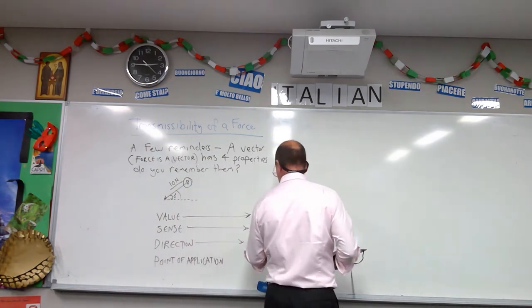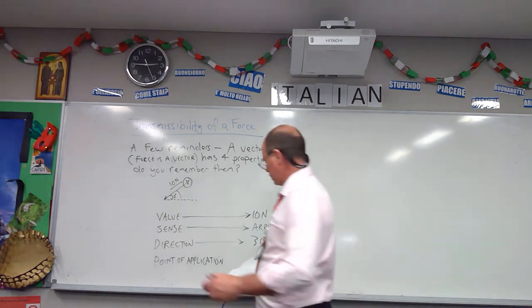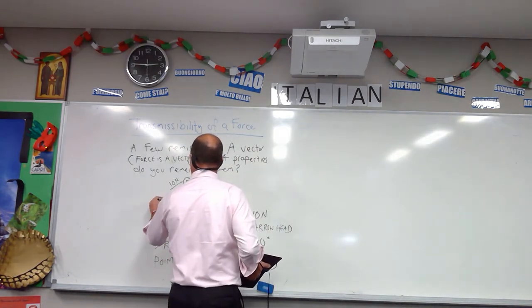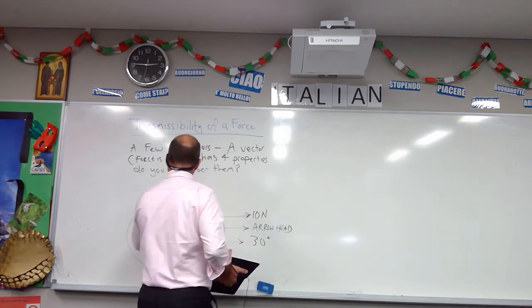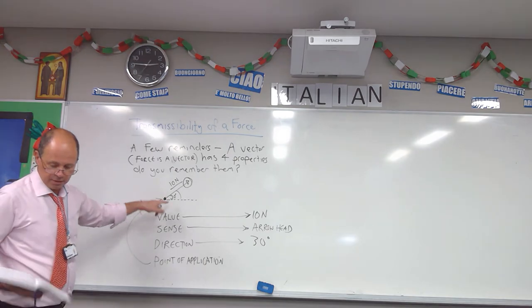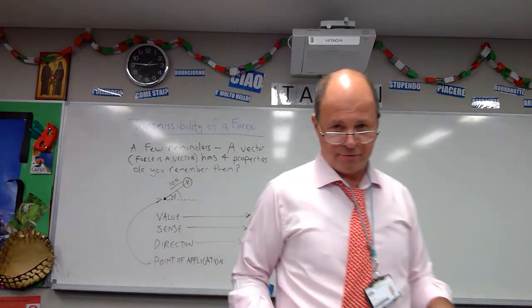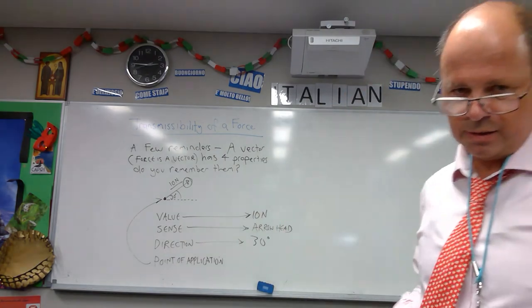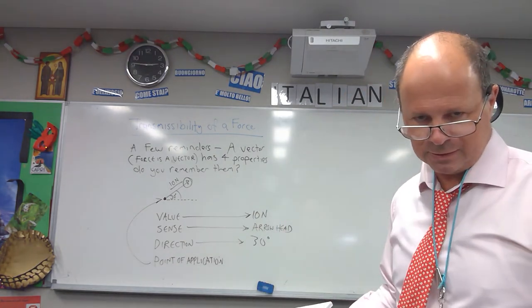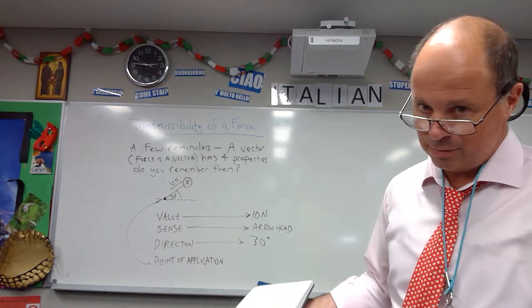So the direction is 30 degrees in this case. And the point of application — that is, in this instance, that little circle where the force is actually pulling or pushing. It's where it's being applied. Those are the four characteristics of a vector, be it velocity, force, or any other vector quantity.